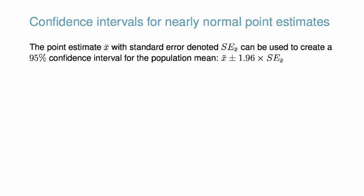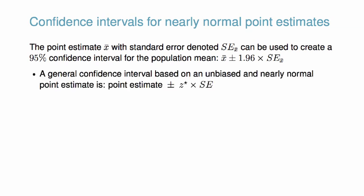We have seen the point estimate X bar with standard error denoted SE X bar can be used to create a 95% confidence interval for the population mean. A general interval based on an unbiased and nearly normal point estimate is: point estimate ± z* × SE.